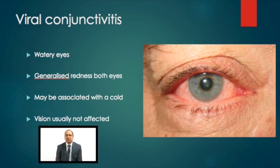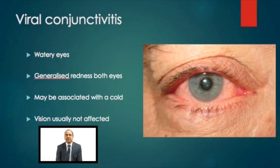Starting with viral conjunctivitis — this is the most common type and is caused by viruses. Viruses cause many types of infection, such as the common cold and flu, and viral conjunctivitis gives this type of appearance: a generalized redness of the eyes. The main feature is watering; the eyes get very watery. They tend not to be sticky or have a discharge, and vision tends to be okay, though the eyes can feel sore and irritable.